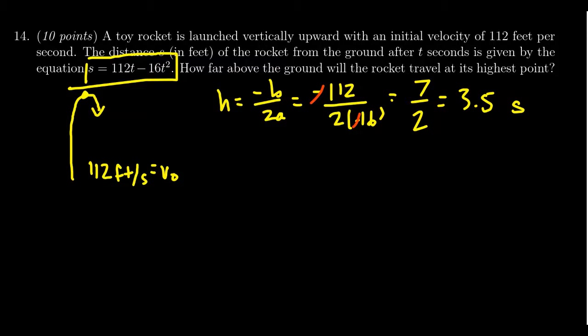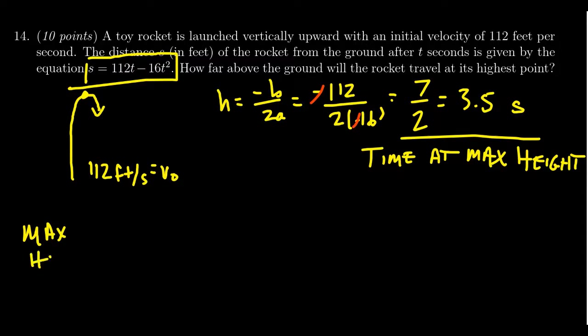So this, we should be clear here, this is not the final answer. This is the time at the maximum height. This is not the maximum height itself. Why do we care about this? Well, the maximum height would then be obtained at this moment in time. It would be 112 times 7 over 2 minus 16 times 7 over 2 squared. So that's what we're looking for in this situation.